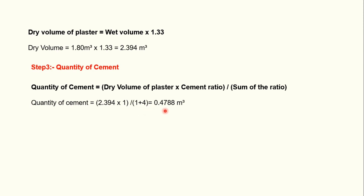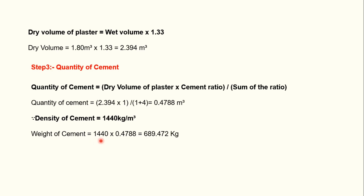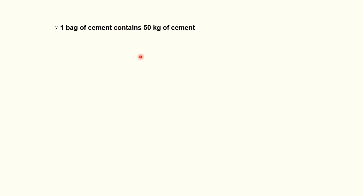The density of cement is 1440 kg per cubic meter. Multiplying density by volume gives the weight of cement: 1440 × 0.4788 = 689.472 kg. Since one bag of cement contains 50 kg, the number of bags equals 689.472 / 50 = 13.78 bags.